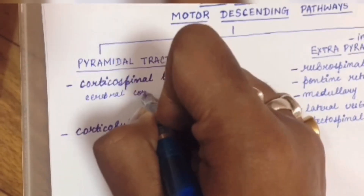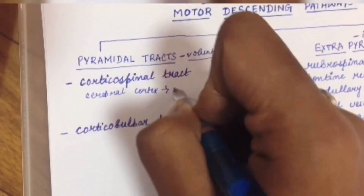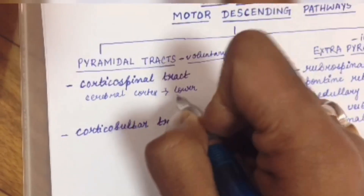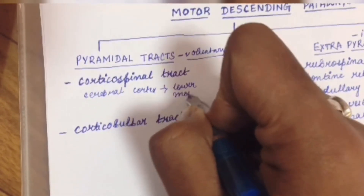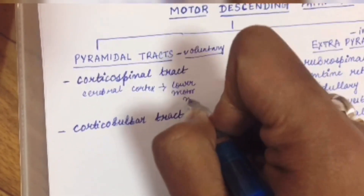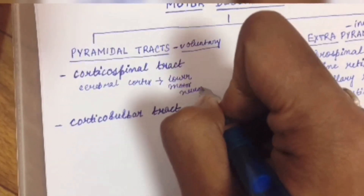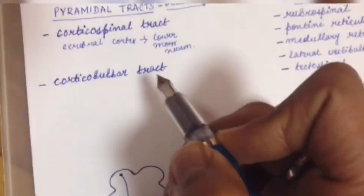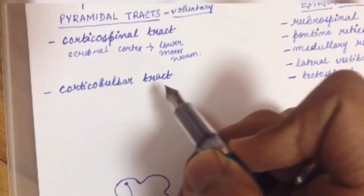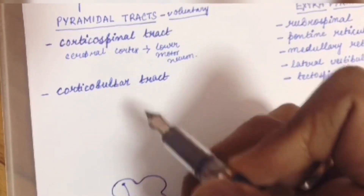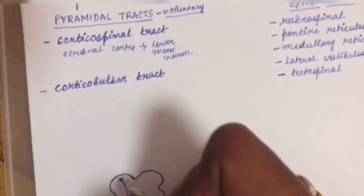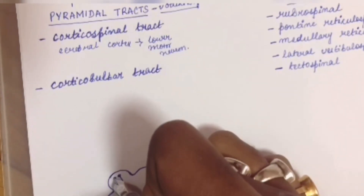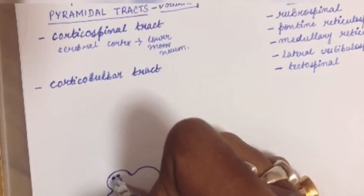The corticospinal tract starts from the cerebral cortex and connects with the lower motor neuron. The corticobulbar tract also starts from the cerebral cortex.